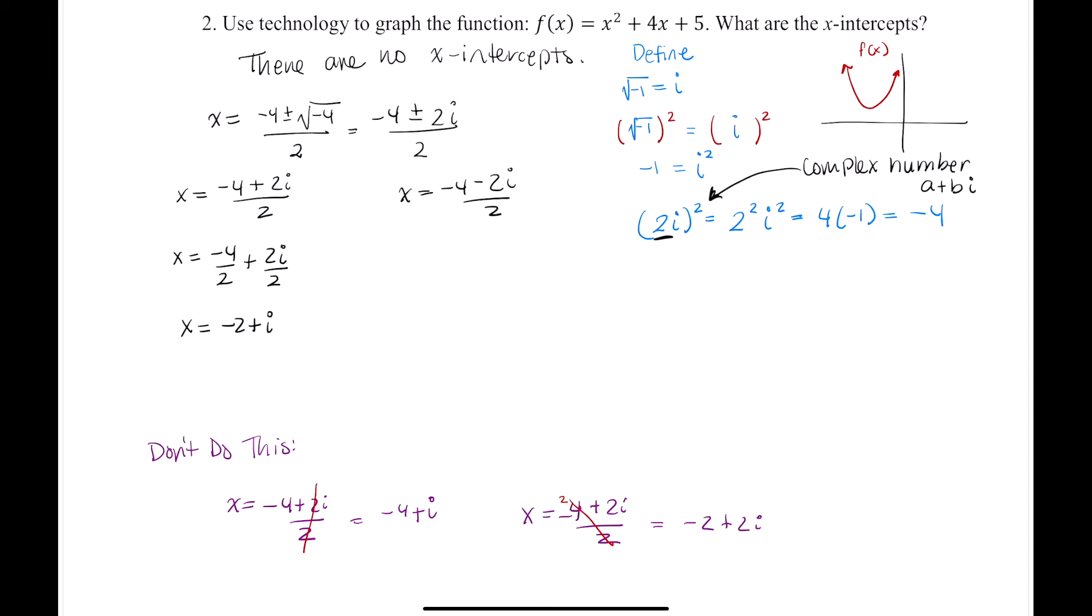Okay, let's keep going. Let's find the other solution. This is x equals negative 4 over 2 minus 2i over 2, which is negative 2 minus i.